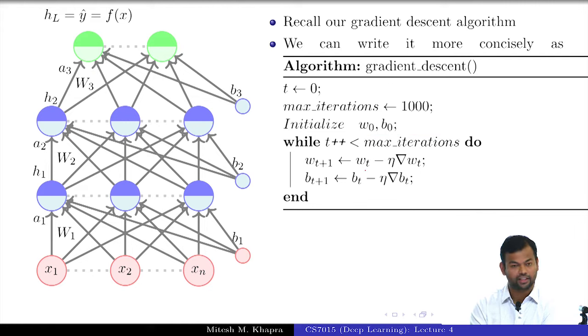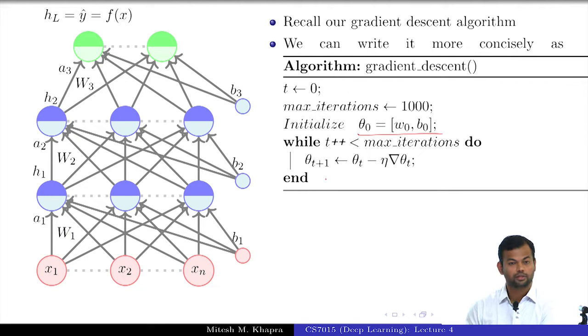Are you okay if I write it this way? These two was actually nothing but a vector at every point. I can just write it this way. Theta is the vector containing w and b. Theta is a vector of all the parameters that my network had; it just so happened that that network had only two parameters.